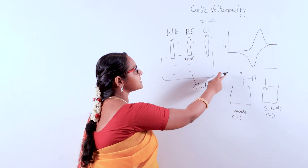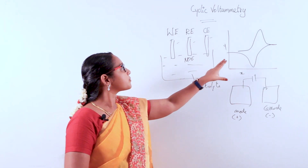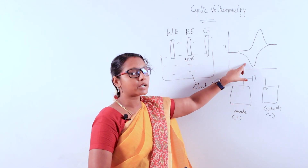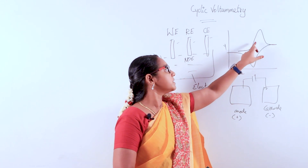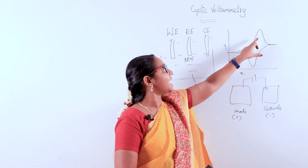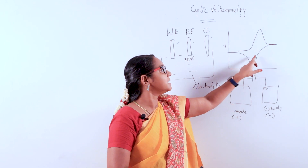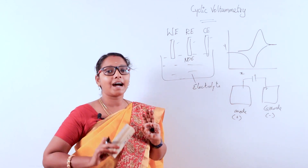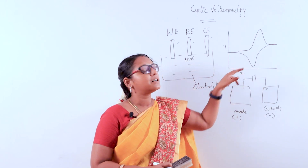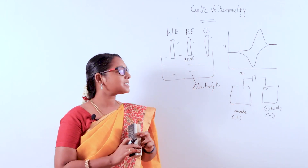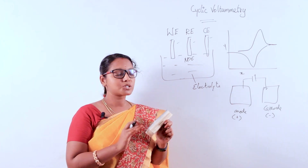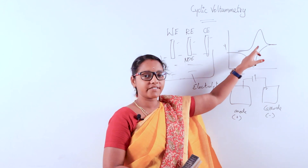From the electrochemical cell we get the cyclic voltammetry curve. This curve shows an oxidation peak and a reduction peak, which represent the redox reactions of the analyte. The oxidation and reduction peaks are the faradaic regions, because they correspond to electron transfer.